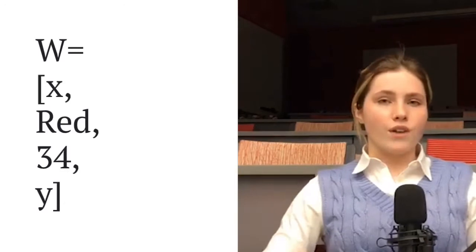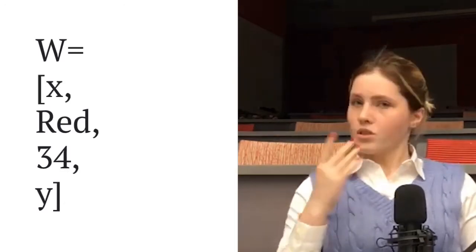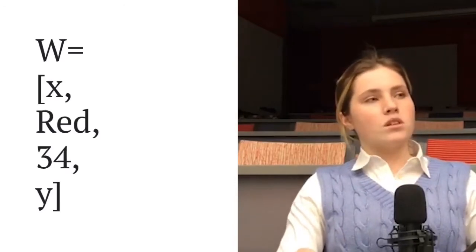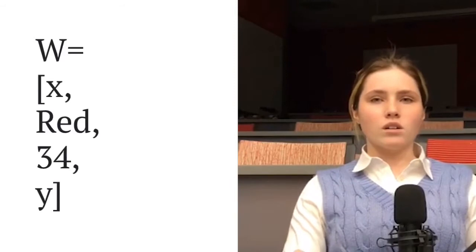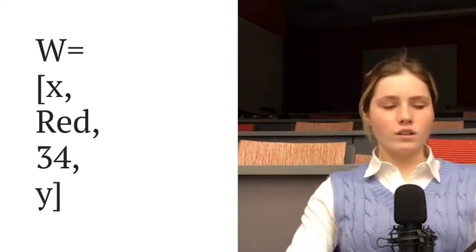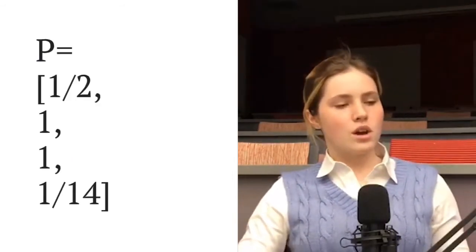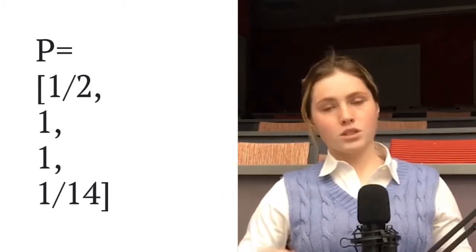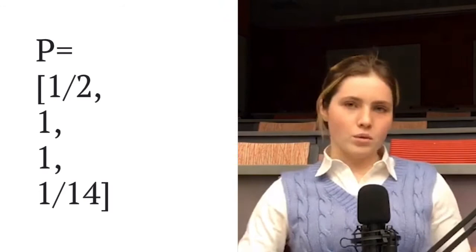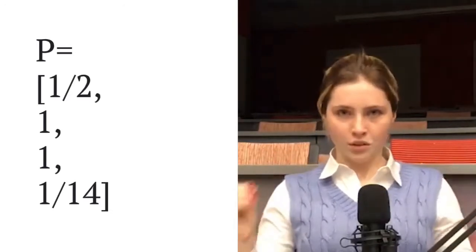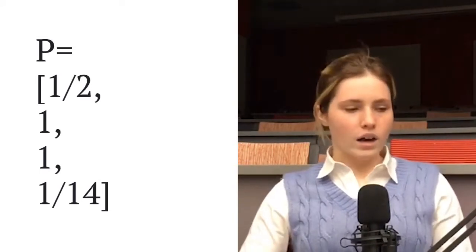We can set these up in our vector and look at this in Hilbert space. This is where Hilbert space gets useful — say we want to get the probability of what that card is. We can apply this to each of the vector components and take their probabilities. The suit can be one of two red suits, so that's one half. Color is known, so that's one. Position is known as 34, so that's one. And the value is one out of 14 possible options, so one fourteenth.